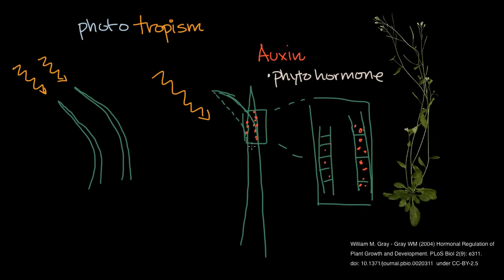So this is what we know about auxin: it's a phytohormone that, whenever it is in higher concentrations and it's active, the cells there are going to elongate, which will cause bending. Things still being studied include what caused the higher auxin concentration on the right-hand side, and the exact mechanisms by which auxin is actually acting. We know things like it creates a more acidic environment, which helps break down the cell walls.